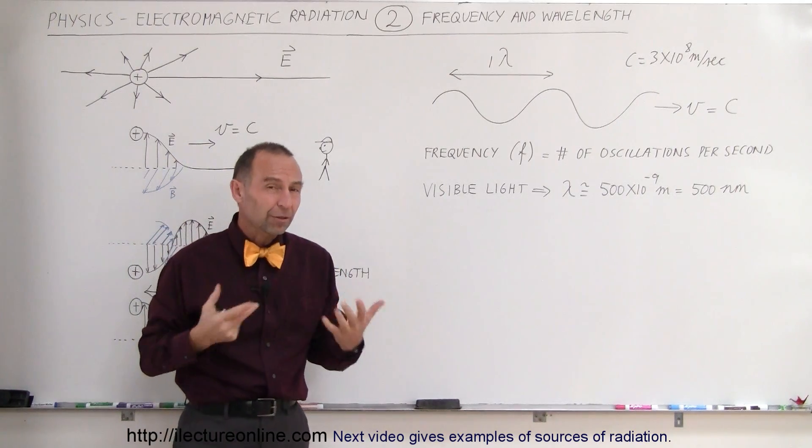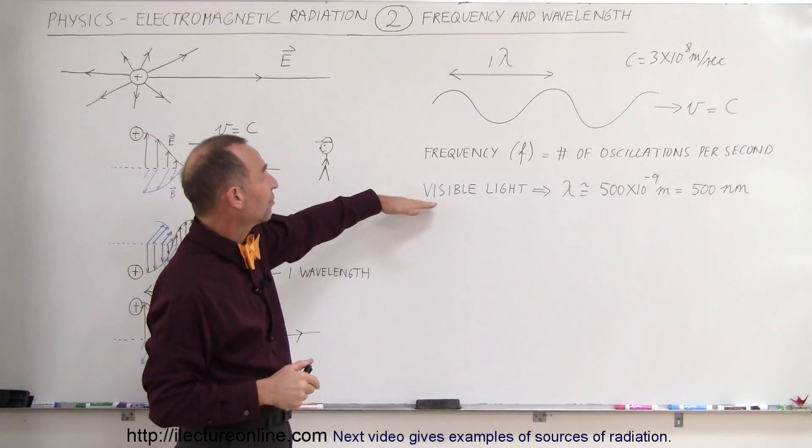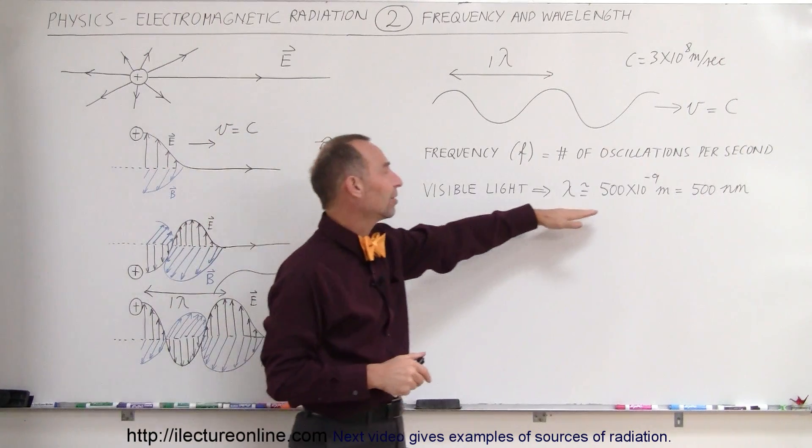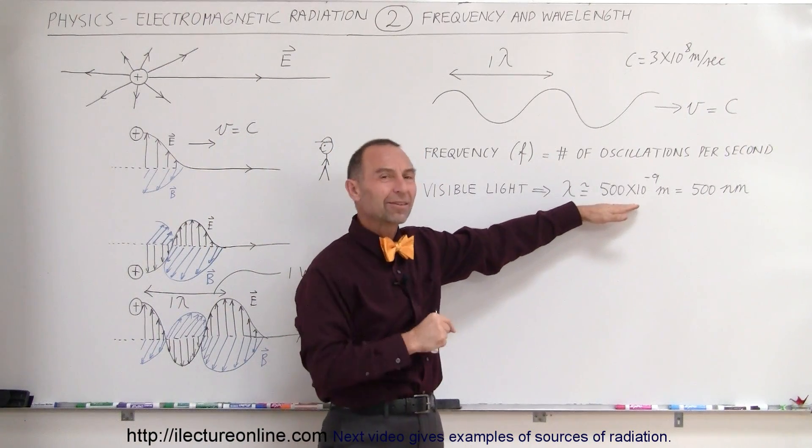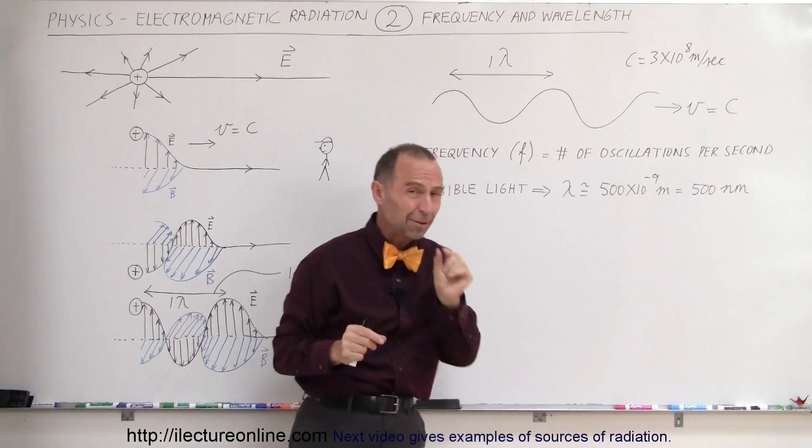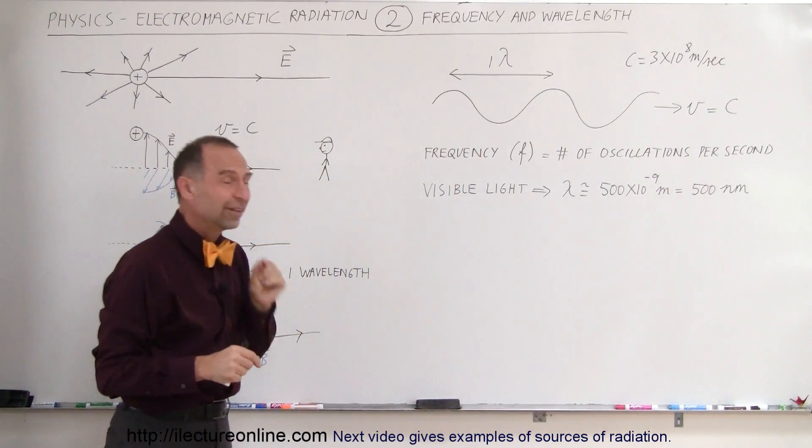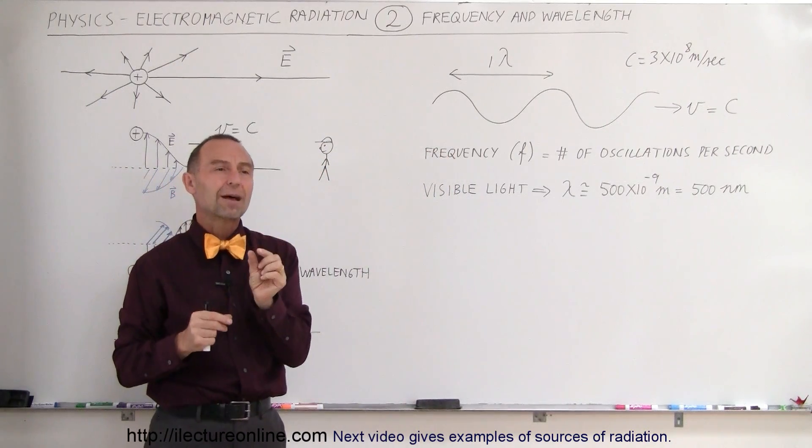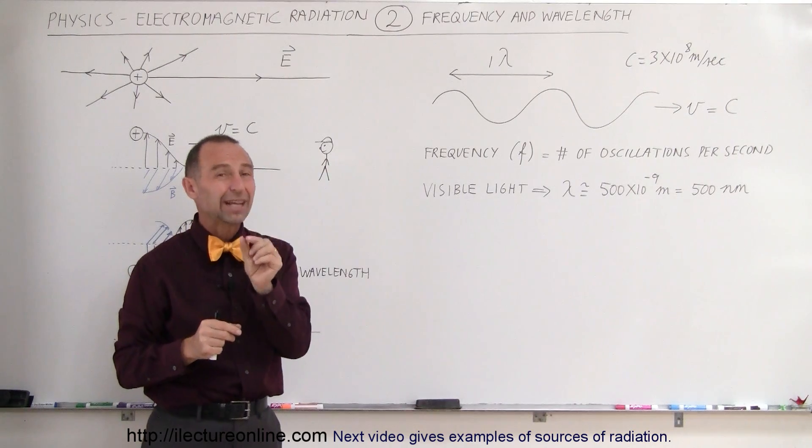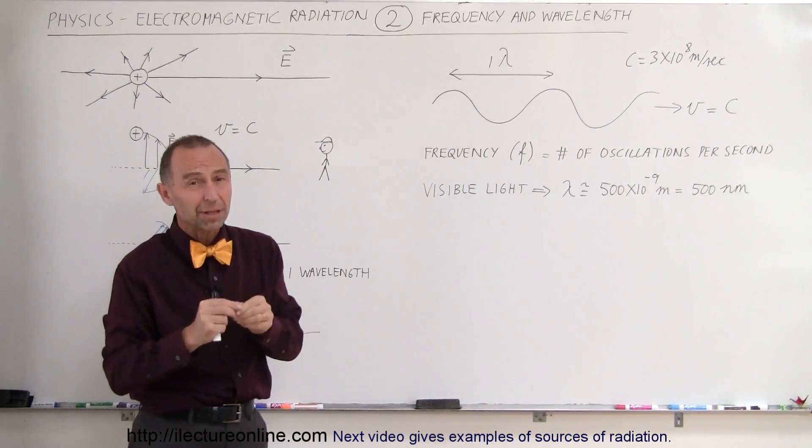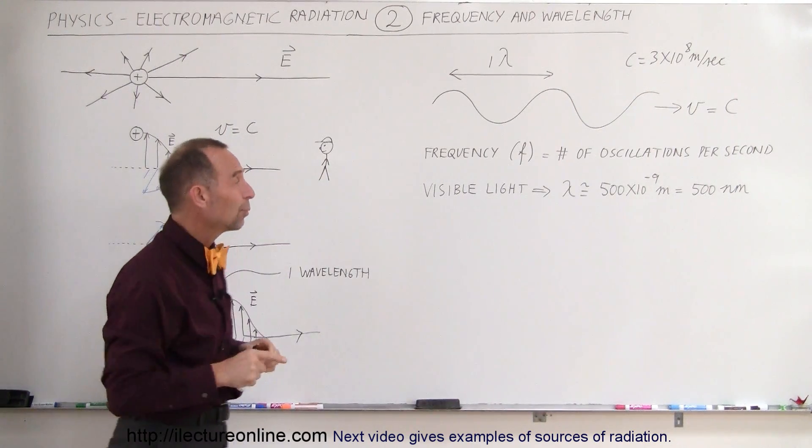Now, to give you an example of how that compares, let's talk about visible light. Visible light has a wavelength of about 500 times 10 to the minus 9 meters, which is about 500 nanometers. That's pretty small because a nanometer, you need 1,000 nanometers for a micrometer, and a micrometer is 1,000 of a millimeter. So, we're talking about very, very tiny wavelengths.